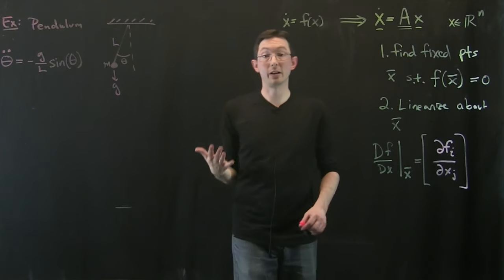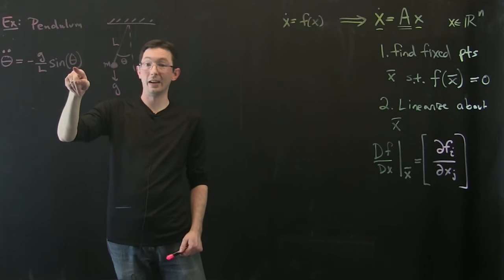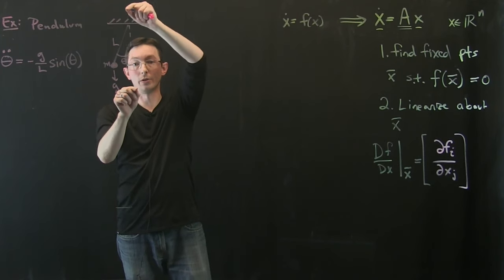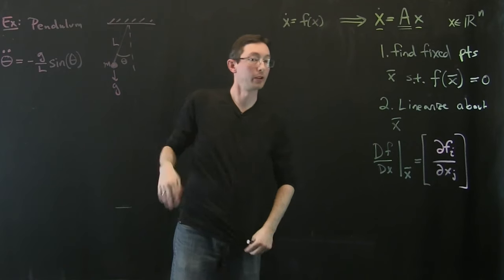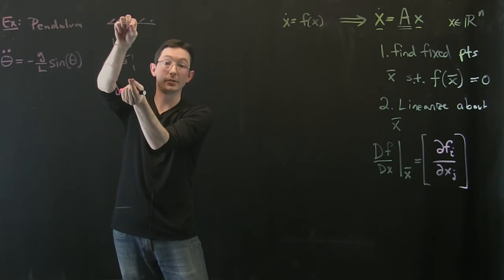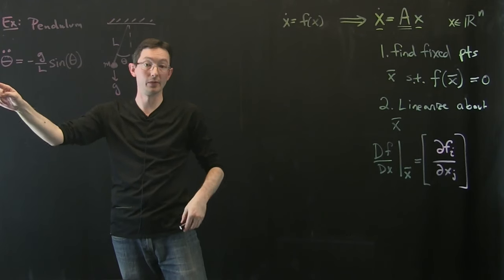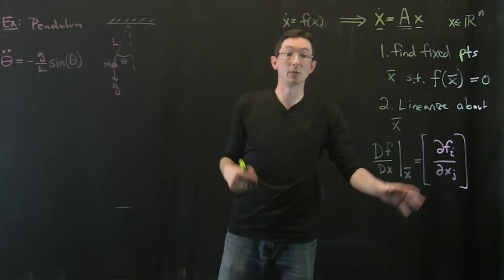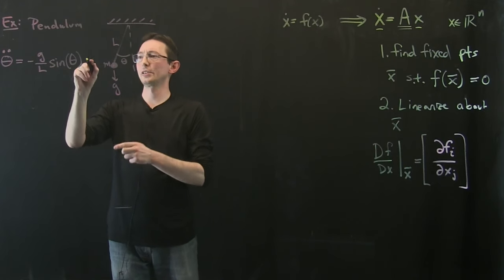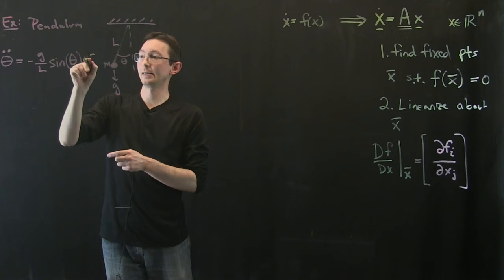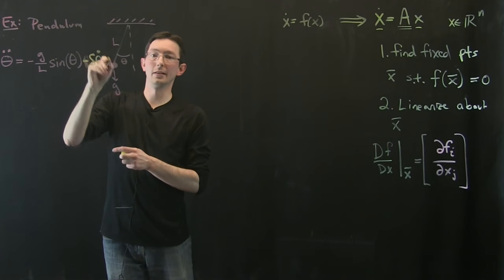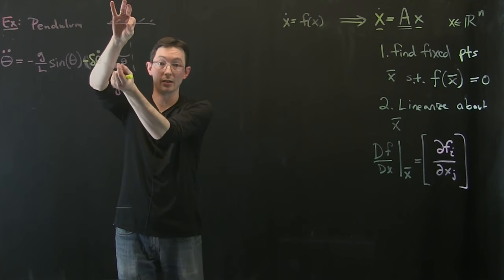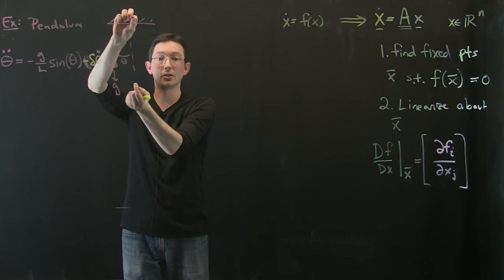You can convince yourself this system has fixed points at theta equals zero (the down position), or pi (the up position), or two pi, three pi, and so on. But it has two basic solutions: theta equals zero and theta equals pi. I also want to add a friction term: minus delta times theta dot. It's really important to consider the system almost certainly has some friction, so this thing doesn't just swing forever - it eventually dies out.